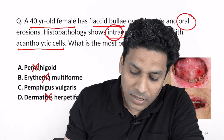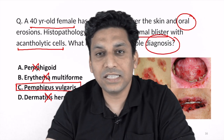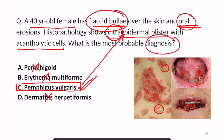This is a case of pemphigus vulgaris. In pemphigus vulgaris, buccal mucosa is involved, this is an intraepidermal lesion, and very flaccid blisters are seen. These are superficial intraepidermal blisters, and many times these blisters rupture to form erosions, so erosions might also be present.